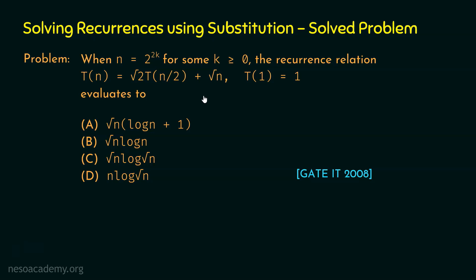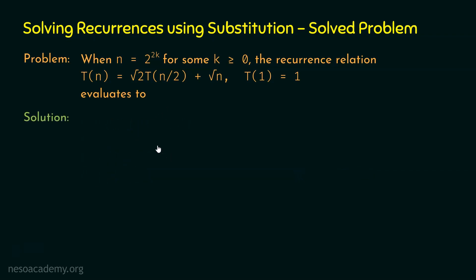We need to find the exact value, not the asymptotic value, of this recurrence relation. The answer options are exact values. Let's dive into the solution, applying the substitution method to the recursive case T(n) = √2·T(n/2) + √n.